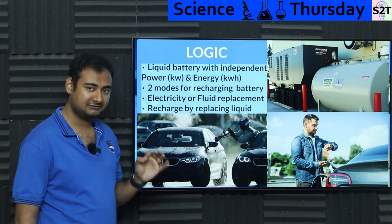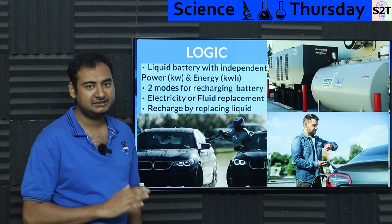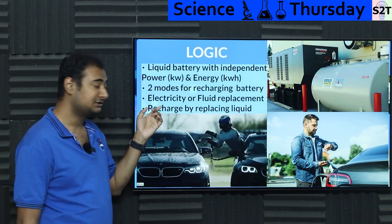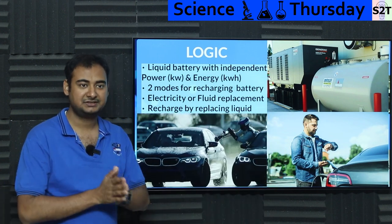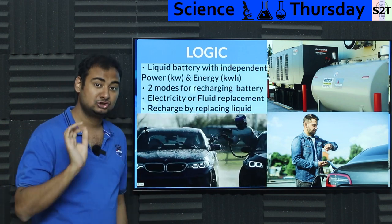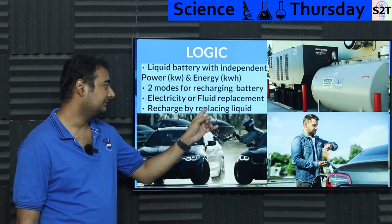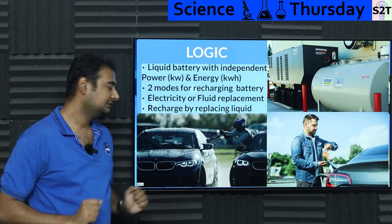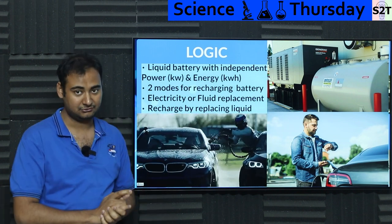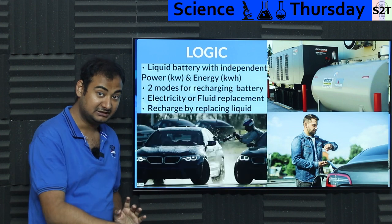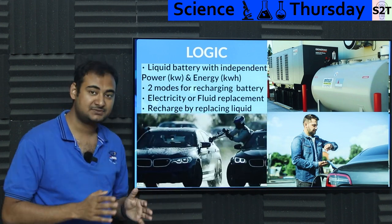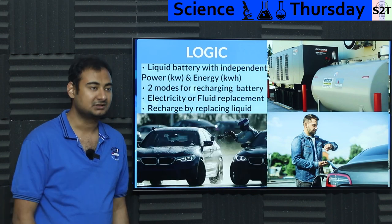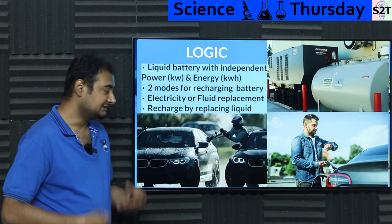When talking about liquid batteries, we have two ways of recharging. Batteries go from phase A to phase B on discharge, and back from phase B to phase A on charge. So you can charge it electrically like current EVs, or you can do fluid replacement — basically draining and refueling it while drifting. You just add liquid electrolytes and your battery is charged. Charging speed would be limited only by the flow rate of electrolytes, which can be very fast — we're really good at pumping liquids, just like petrol pumps.